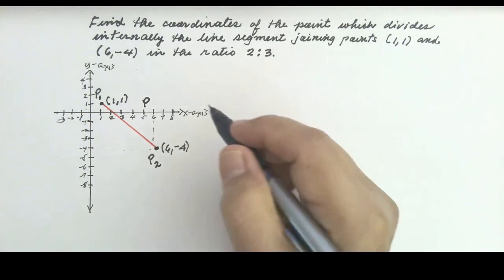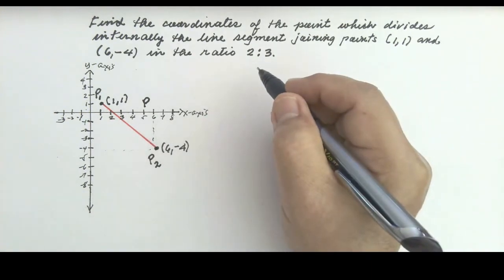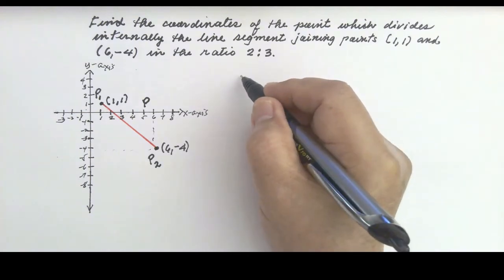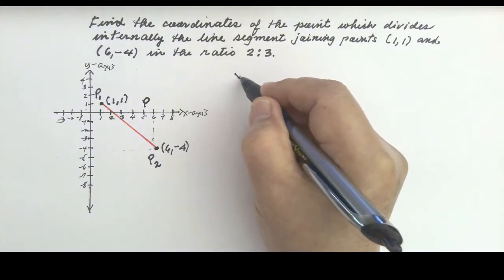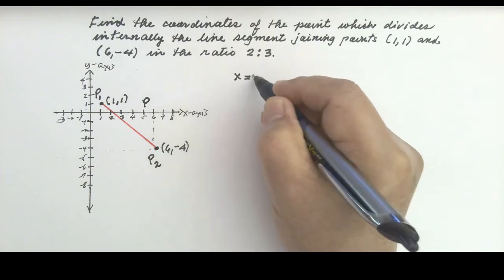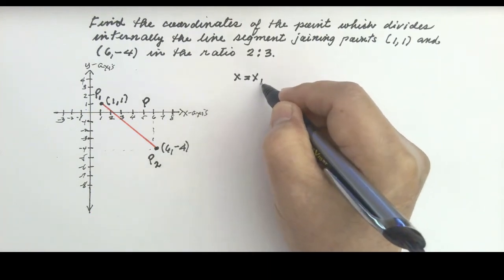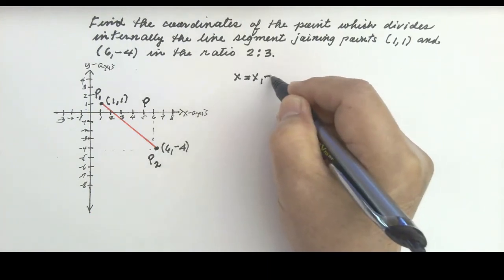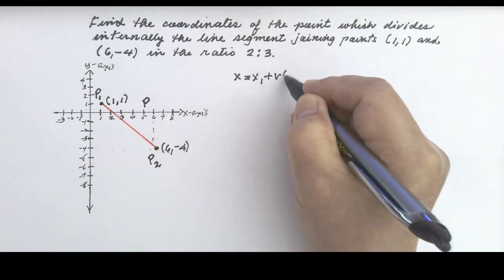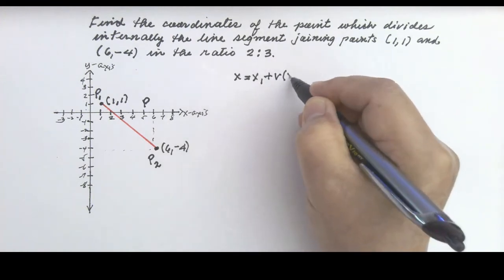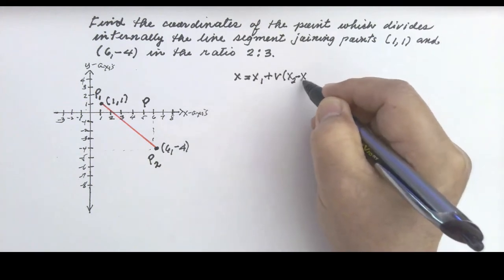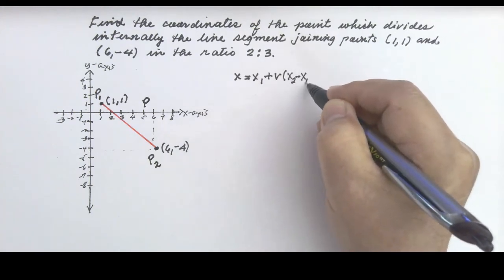To solve for that point, we are going to use the formula: x = x₁ + R times (x₂ minus x₁).